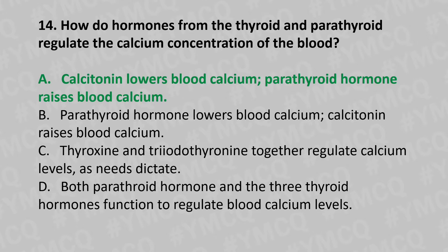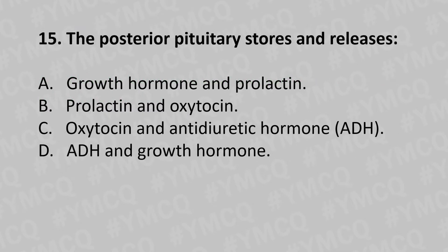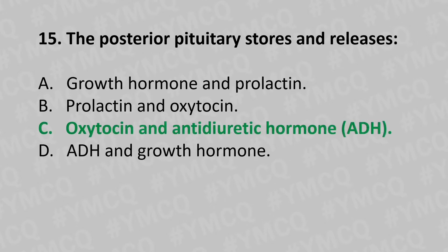Moving to our fifteenth question. The posterior pituitary stores and releases: Option A: growth hormone and prolactin. Option B: prolactin and oxytocin. Option C: oxytocin and antidiuretic hormone (ADH). Option D: ADH and growth hormone. And the answer is Option C: oxytocin and antidiuretic hormone.